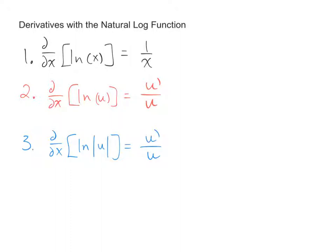If you take the derivative with respect to x of the natural log of the absolute value of u, you end up with u prime over u, the derivative of u over u.